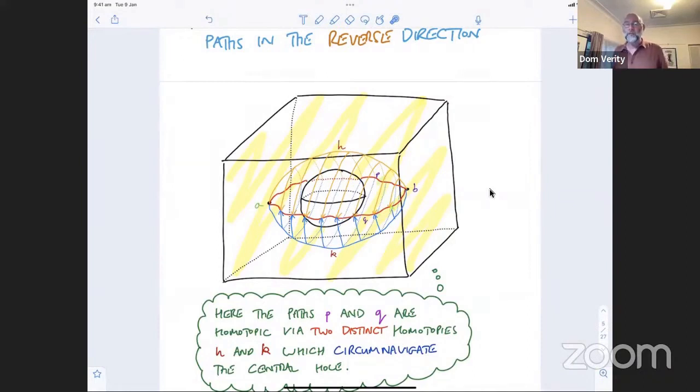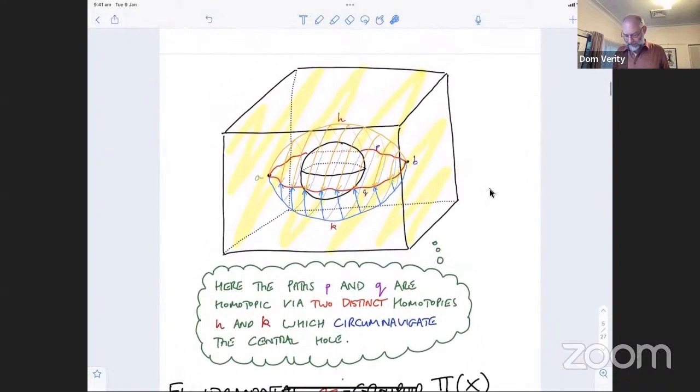So from the point of view of this fundamental groupoid that we built before, this is really quite a boring space. There's only one arrow going from A to B and vice versa. There's not really very much information being stored inside this fundamental groupoid. And so we start to think, well, there is some extra information we could extract from this if we were careful.